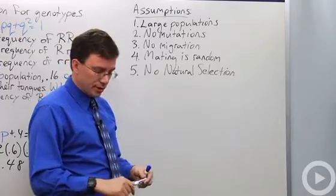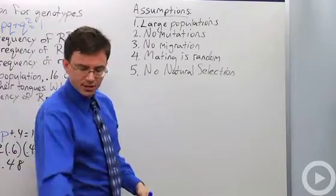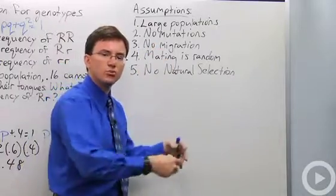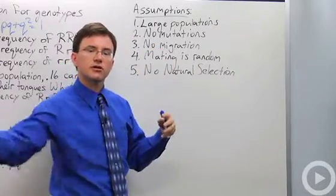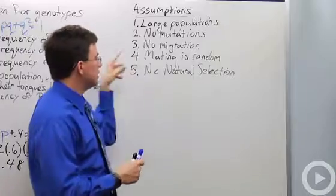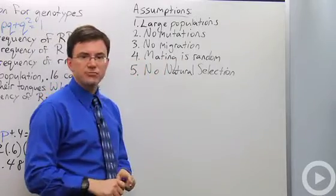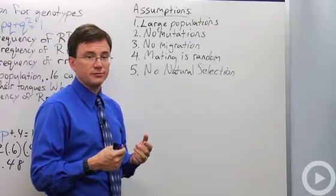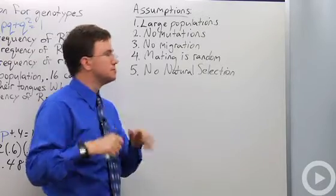Another assumption is no migration. If you flip a coin, all of a sudden somebody tosses down their own coin, that changes things. So no people moving in with their tongue rolling abilities or none of our non-rolling cousins leaving. You also have to assume mating is random for that particular trait so that people aren't sort of going, can you roll your tongue? Hubba hubba.